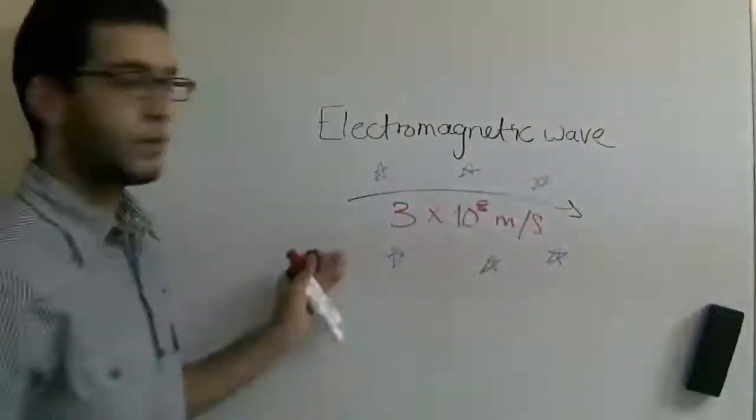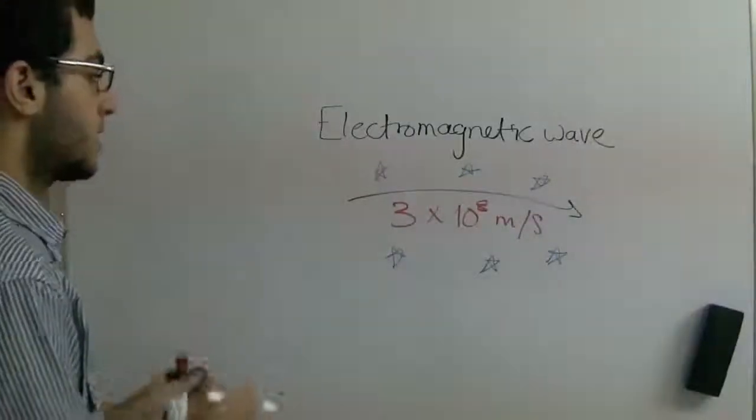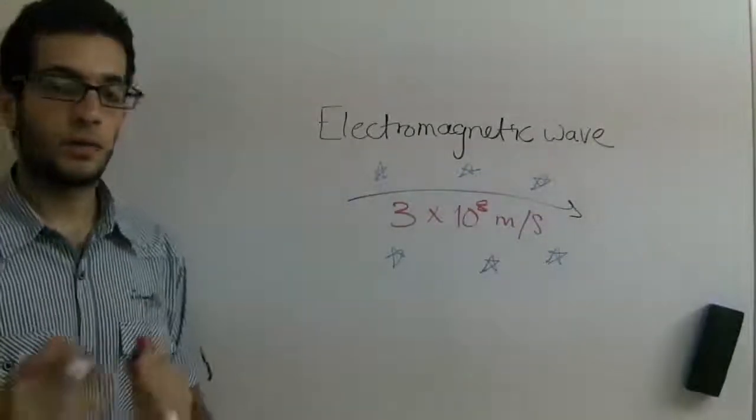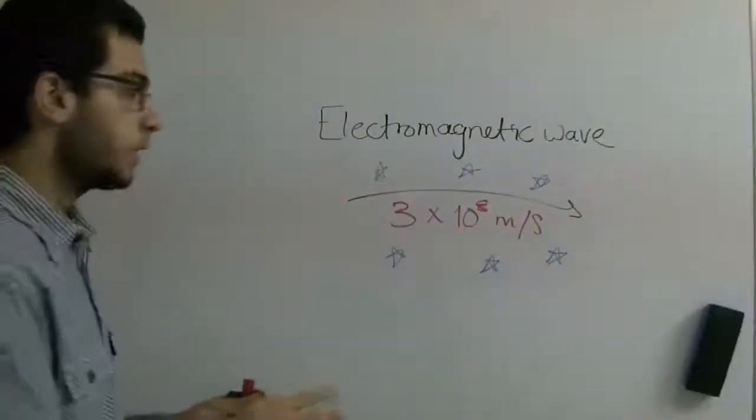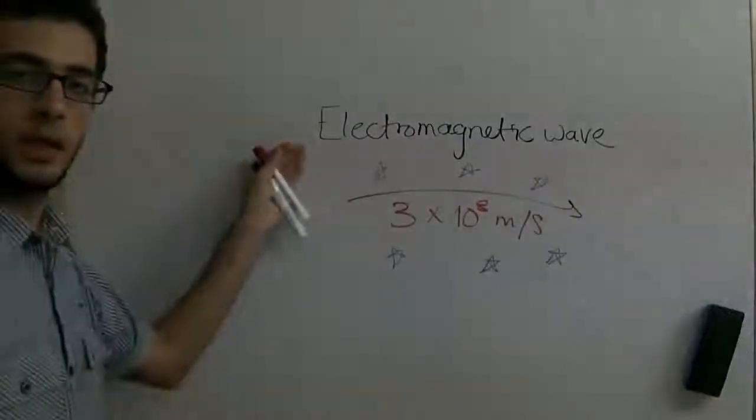And on the contrary, a sound wave, for example, cannot travel through space. It needs a medium to propagate through, and that's why it's considered a mechanical wave and not an electromagnetic wave.